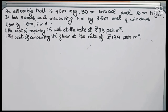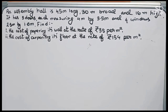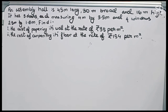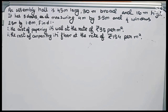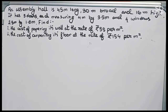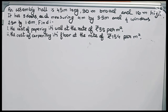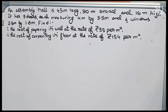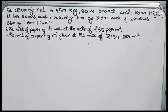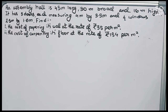Welcome to this video. In this video our question is: an assembly hall is 45 meter long, 30 meter broad and 16 meter high. It has 5 doors each measuring 4 meter by 3.5 meter and 4 windows 2.5 meter by 1.6 meter. Find the cost of papering its walls at the rate of Rs 35 per meter square and the cost of carpeting its floor at the rate of Rs 154 per meter square.